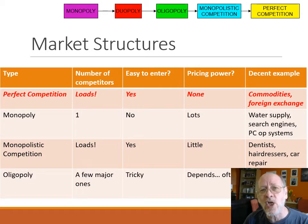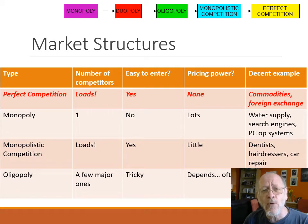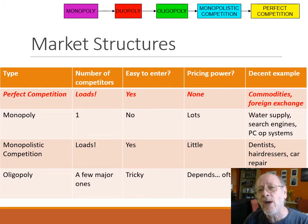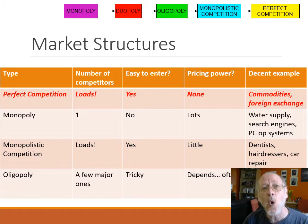A less good example is the foreign exchange market. By and large, that is reasonably competitive — there are loads of people you could buy foreign exchange from, and loads of people buying it, such that if the value of the pound goes up or down, broadly speaking it's what the market is doing. The reason I say it's a reasonably good example is that occasionally the government can get involved — for example, the Chinese government is a really big player trying to manipulate the value of the yuan. But in Europe, other than occasionally in an emergency, the price of foreign currency is what hundreds and thousands of buyers and sellers want it to be.